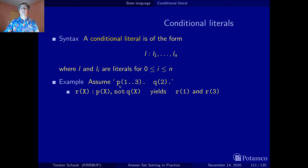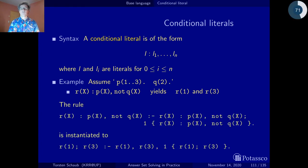So actually expanding this conditional literal here in the presence of these two facts yields r(1) and r(3). And again, I'm expressly a bit vague here because the context will now determine what happens with r(1) and r(3). And here's a rule that has it all. So I put the same conditional literal in the head of the rule, in the body of the rule and also in a cardinality constraint inside.